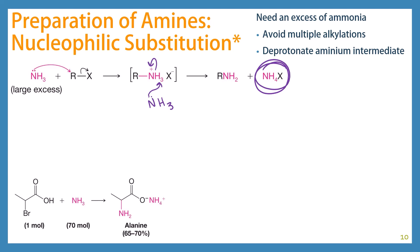You can also do this with an alpha halo acid, which we learned about back in chapter 18. If you add in an excess of ammonia — in this case a 70-to-1 excess, which is quite a lot — your first reaction is between the ammonia and the acid. Then you need more ammonia to displace the bromine, and more ammonia to deprotonate the amine. But it's doable.